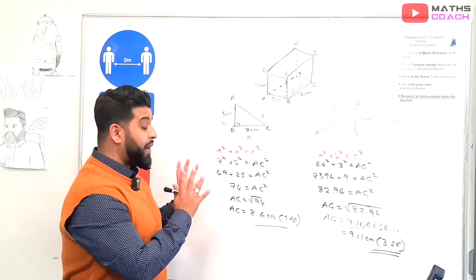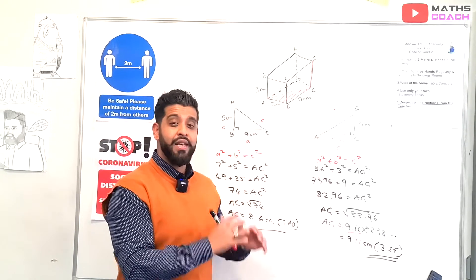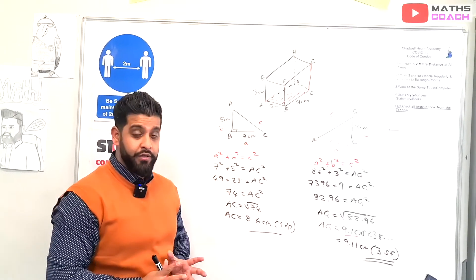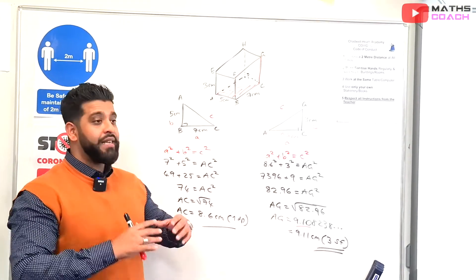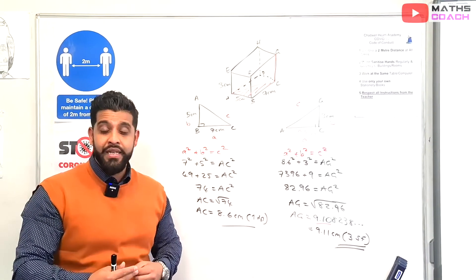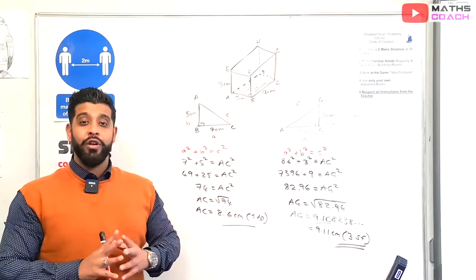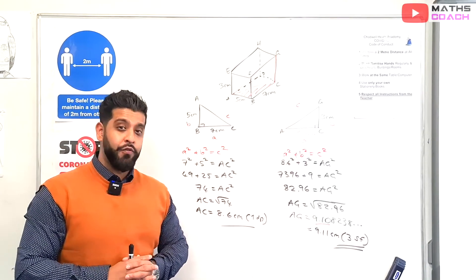Hope you've enjoyed that lesson. Pythagoras theorem in 3D works in exactly the same way for whatever questions. You always have to find the triangles on the different planes, find the missing lengths, and then add to the final triangle that you're looking to find the lengths for.